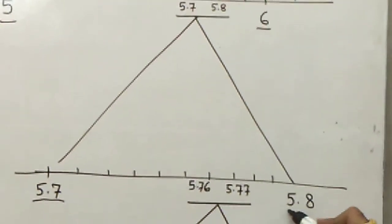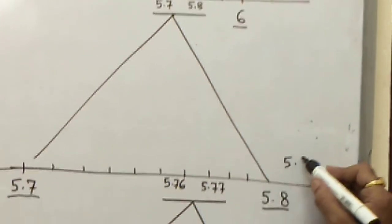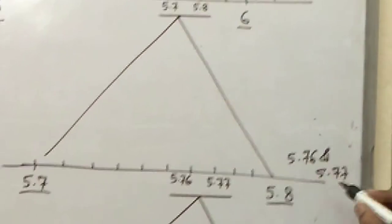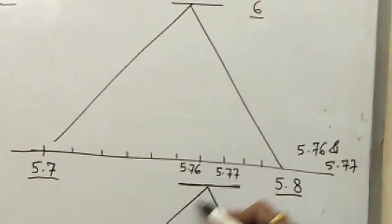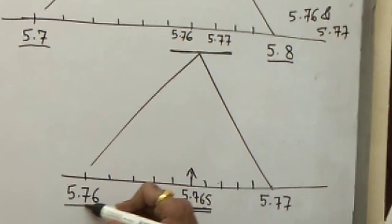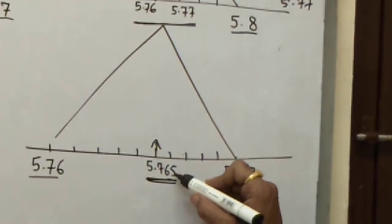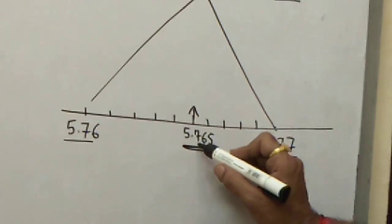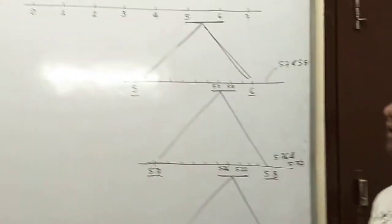We enlarge 5.7 and 5.8 again. Our number lies between 5.76 and 5.77, since the third decimal place determines this. We enlarge once more, dividing 5.76 and 5.77 into 10 parts: 5.761, 5.762, 5.763, 5.764, and 5.765. We mark 5.765 and we have located the given number on the number line.